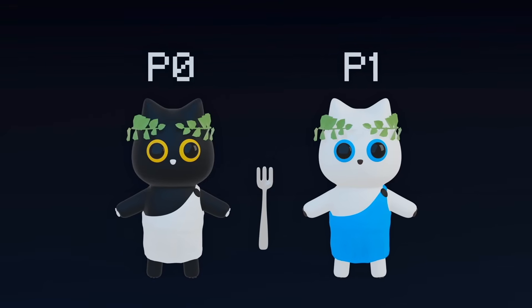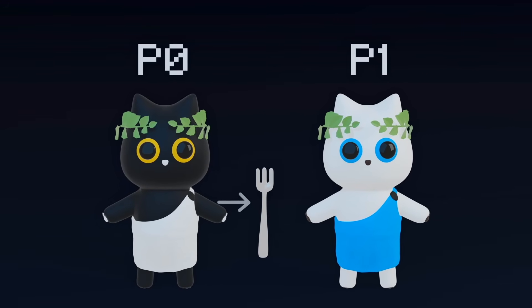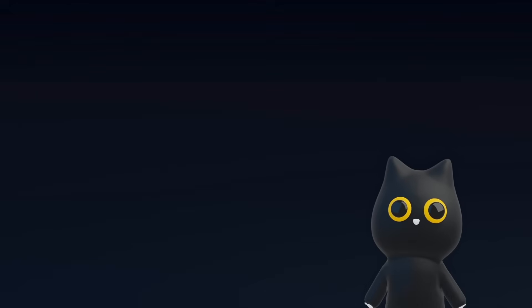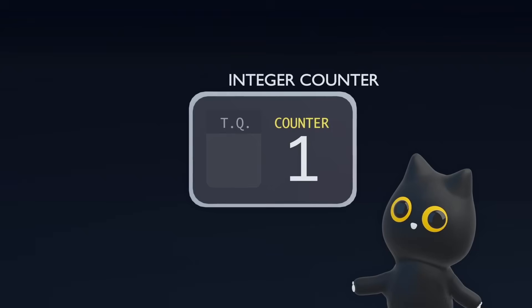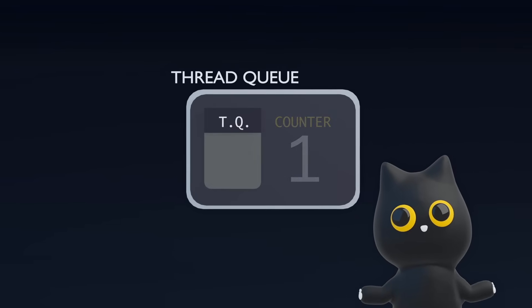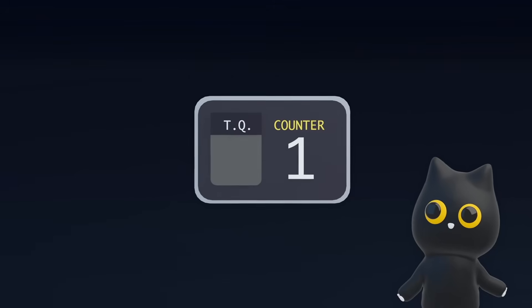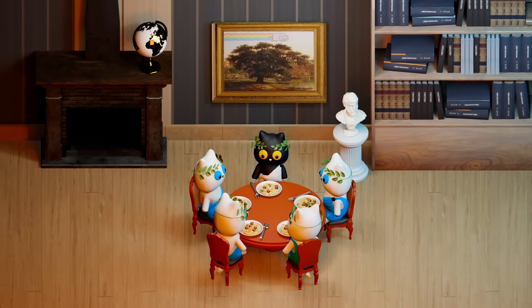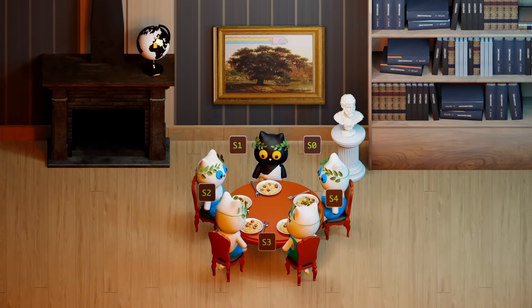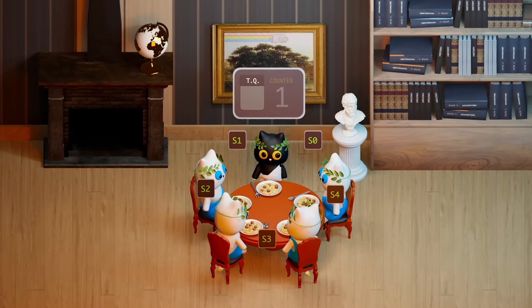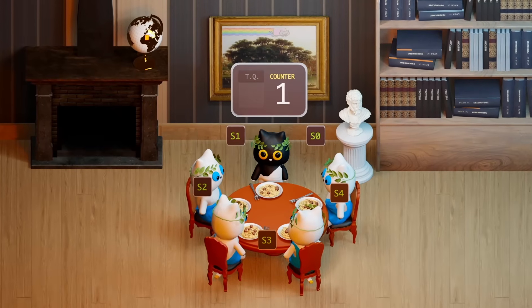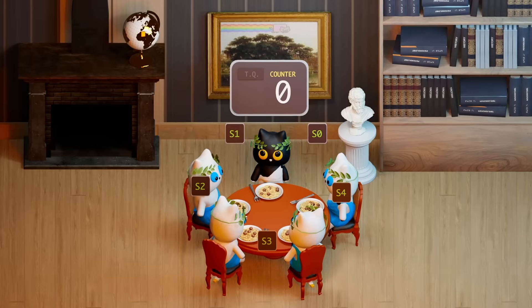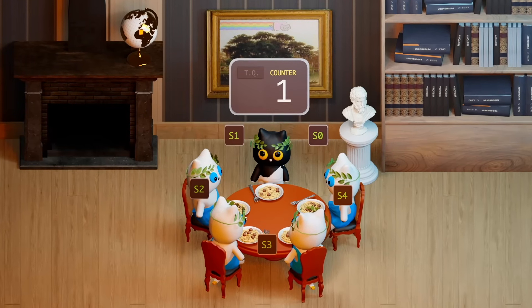Let's start by tackling the first constraint: preventing two philosophers from using the same fork. We can design something known as a semaphore. A semaphore consists of two components: an integer counter and a thread queue. These components have special properties that help us deal with synchronization. We attach a semaphore for each resource on the table — in other words, one semaphore for each fork. The integer counter represents the number of shared resources currently available. For each fork, the integer counter's minimum value is zero and the maximum value is one, since only one philosopher can use it at any given time.